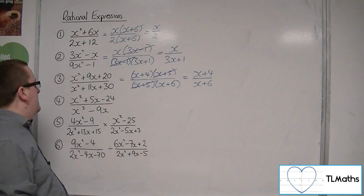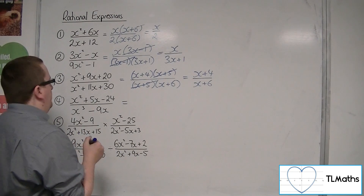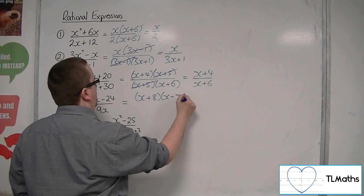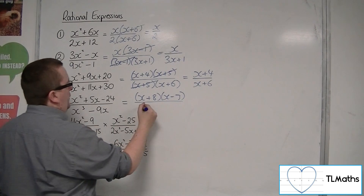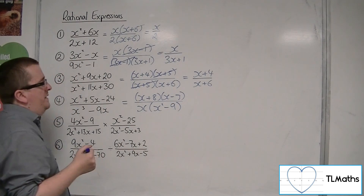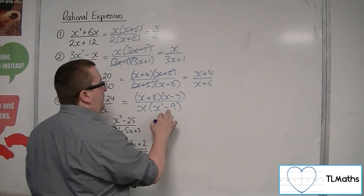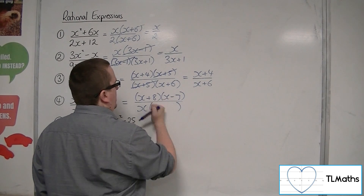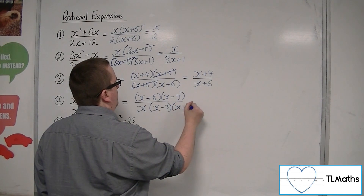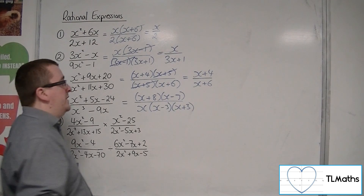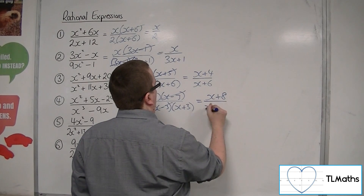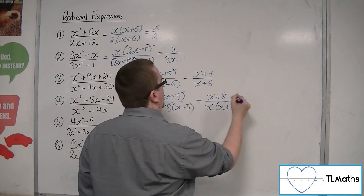Number four, similar idea. In the numerator we would have x plus 8 times x minus 3. We can pull x out and have x squared minus 9. Now x squared minus 9 is the difference of two squares, so I could write that as x minus 3 times x plus 3. So I have a common factor in the numerator and the denominator of x minus 3, leaving x plus 8 over x lots of x plus 3, and I would leave it like that.